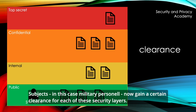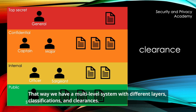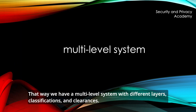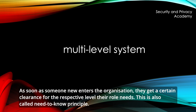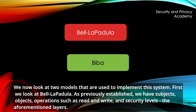Subjects, in this case military personnel, now gain a certain clearance for each of these security layers. That way, we have a multi-level system with different layers, classifications and clearances. As soon as someone enters the organization, they get a certain clearance for the respective level their role needs. This is also called the need-to-know principle. We now look at two models that are used to implement this system.